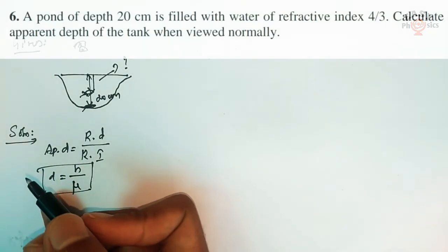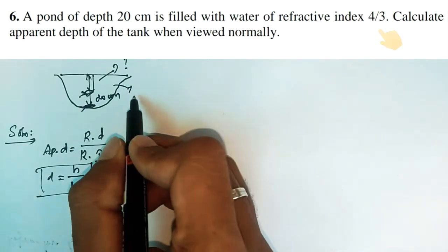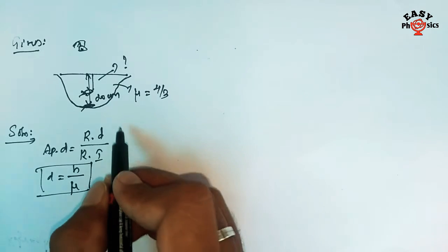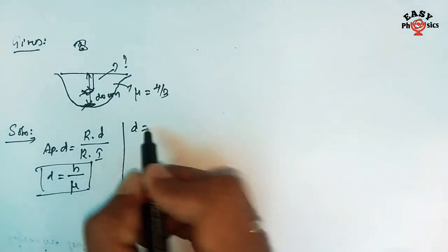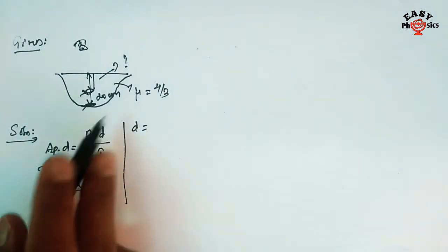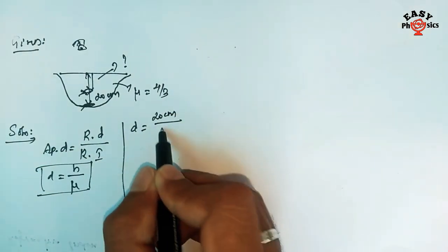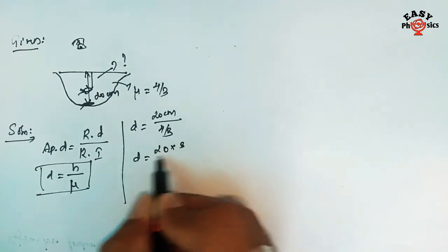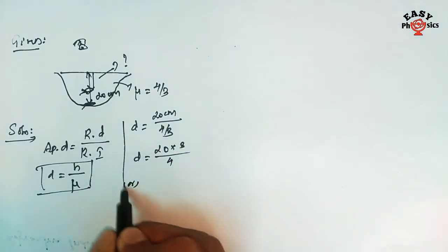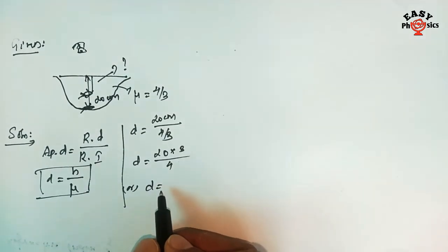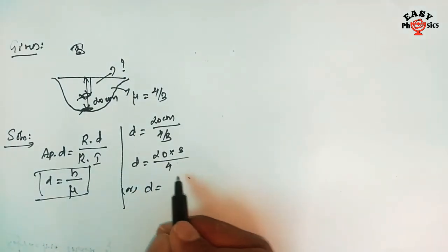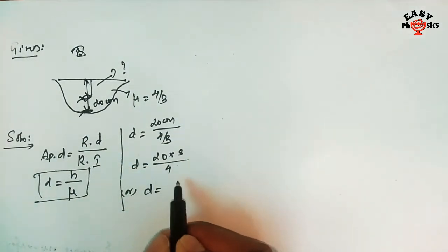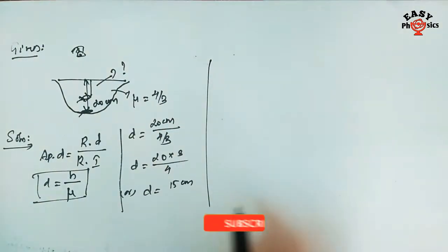If we substitute the values using this relation, we get a direct answer. The refractive index mu is equal to 4 by 3. So, apparent depth d = 20 cm divided by (4/3), which equals 20 × 3 divided by 4 = 60 divided by 4 = 15 cm. This is the answer.